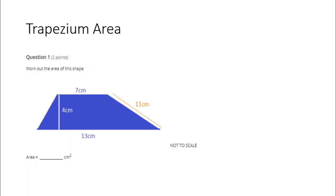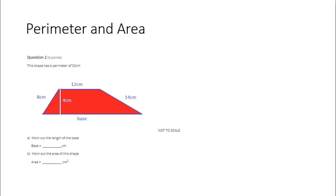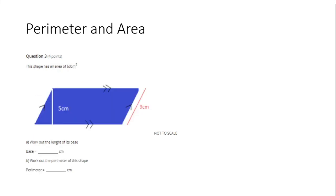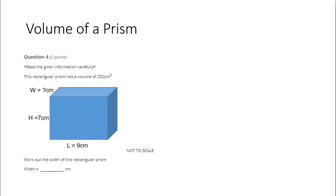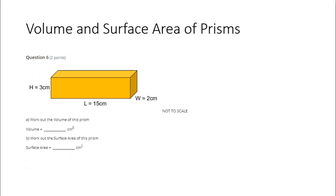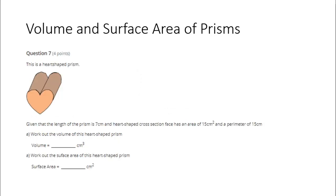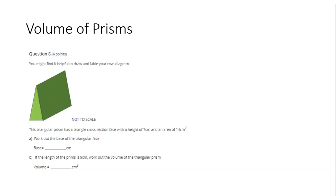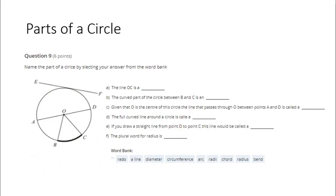This first question is about the area of a trapezium — I hope you know that formula. This next one is about perimeter and area, again based on a trapezium. This one is about perimeter and area of a parallelogram, another formula that you should know. This next one is the volume of a prism, in this case a rectangular prism. This next one is the surface area of a prism, more specifically a rectangular prism. This is the volume and surface area of a rectangular prism. This is the volume and surface area of a heart-shaped prism, so there may be other formulas that you need to use there. This is the volume of a triangular prism, and this last question is about the parts of a circle, so I hope you know these parts of a circle.